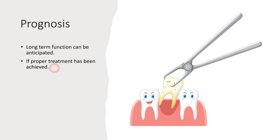In this video we covered everything you need to know about ankylosed teeth — starting with identifying what an ankylosed tooth is, then its etiology, diagnosis, classification, and finally the different treatment plans for deciduous and permanent ankylosed teeth. I hope this video was useful. If you liked it, please like, share, subscribe, and press the bell icon. Thank you for watching — see you next time.